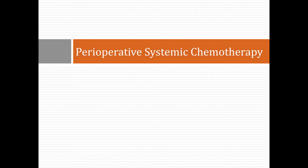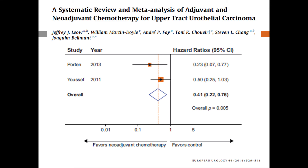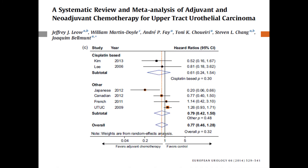Patients who have metastatic upper tract urothelial carcinoma usually need to get chemotherapy before surgery. Multiple studies in the last few years have shown there is benefit to doing chemotherapy before we remove the kidney. This is an analysis combining two studies showing that giving chemotherapy prior to surgery is beneficial, and this is a follow-up chart also showing the same thing.